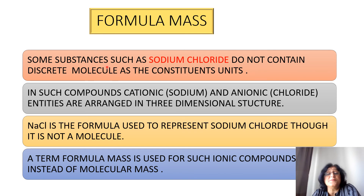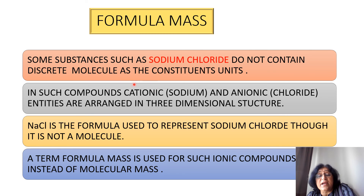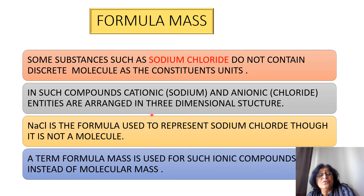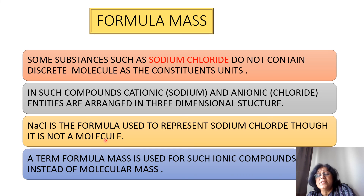Formula mass: some substances such as sodium chloride do not contain discrete molecules as constituent units. Instead, there are cationic and anionic entities present — sodium is the cationic part and chloride is the anionic part — arranged in a three-dimensional structure. NaCl is the formula used to represent sodium chloride, though it is not a molecule. The term formula mass is used for such ionic compounds instead of molecular mass.